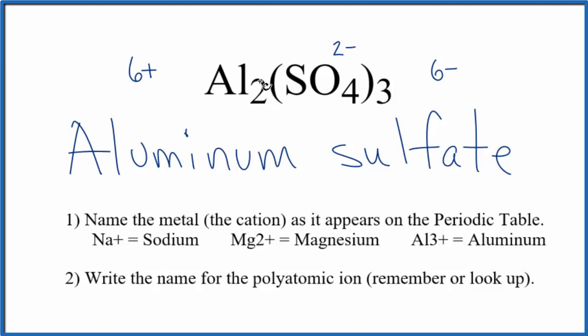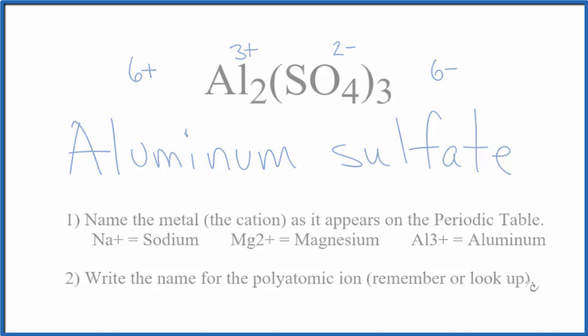So two times 3 plus gives us 6 plus. We need two aluminum atoms to bond with these three sulfate ions for aluminum sulfate. This is Dr. B with the name and formula for aluminum sulfate, Al2(SO4)3. Thanks for watching.